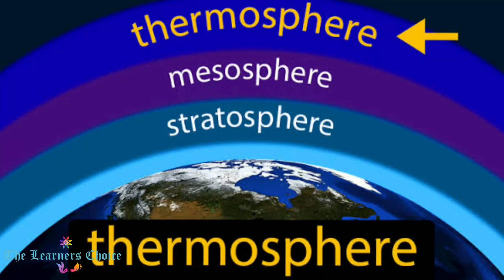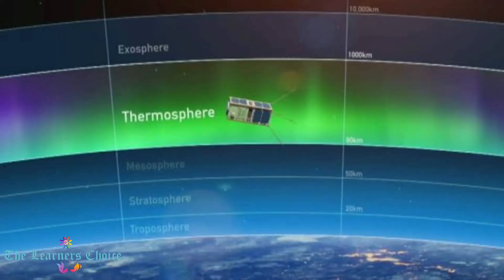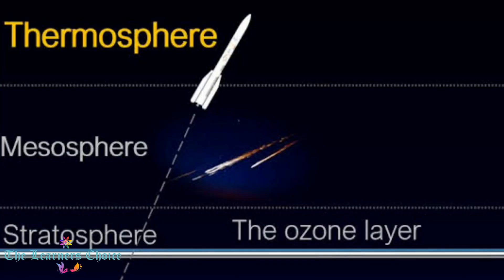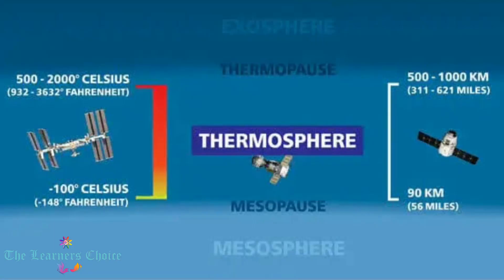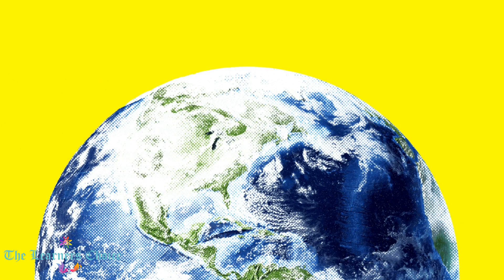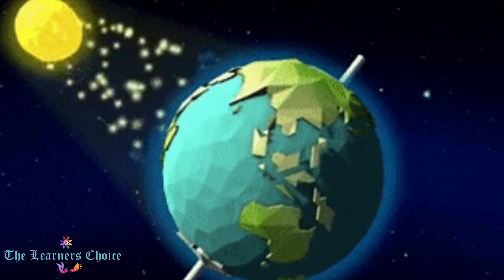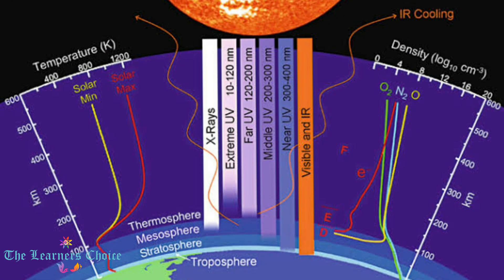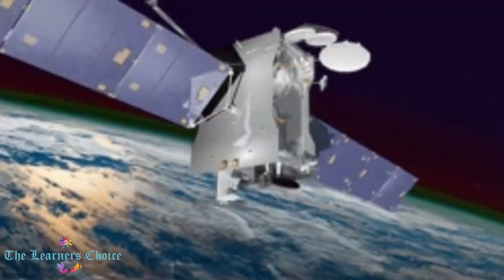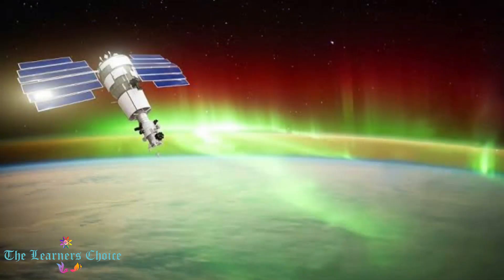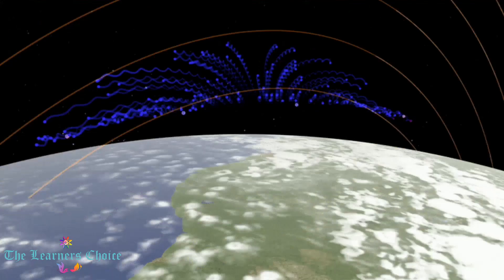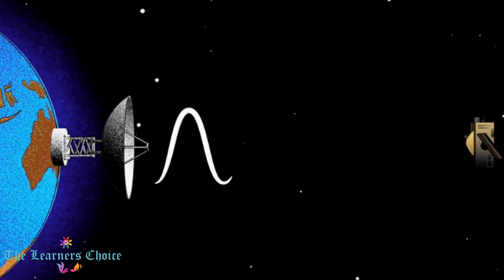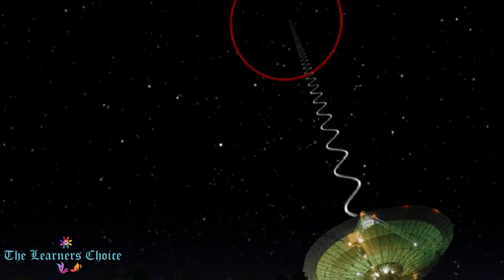The thermosphere lies above the mesosphere and is located between about 80 to 700 km above Earth's surface. This is the region where the temperature increases as you go higher up. Temperature in the upper thermosphere can range from about 500°C to 2000°C or even higher. This temperature increase is caused by the absorption of energetic ultraviolet and X-ray radiation from the sun. Satellites orbit Earth within the thermosphere. It is a cloud and water vapour free layer where auroras — the northern lights and southern lights — are sometimes seen. The lowest part of this layer is the ionosphere, where electrically charged ions and molecules are formed and radio signals are reflected back to Earth.